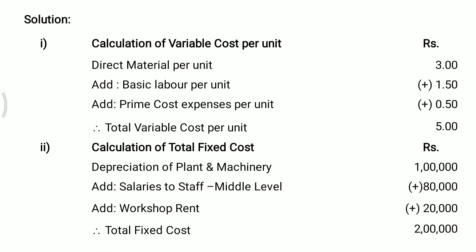Now we will see the solution. First, we calculate variable cost per unit. The variable costs given are direct material per unit, basic labor per unit, and prime cost per unit: rupees 3 plus rupees 1.50 plus rupees 50 paise, so total variable cost per unit is rupees 5. Fixed costs given are depreciation, salaries, and workshop rent: rupees 1 lakh plus 80,000 plus 20,000, so total fixed cost is rupees 2 lakh.